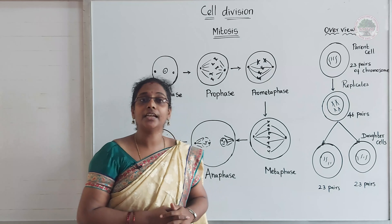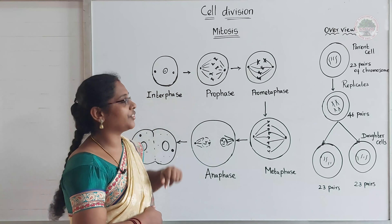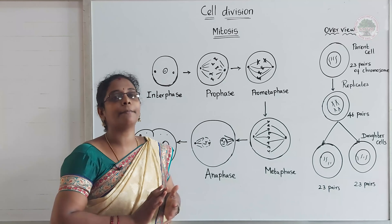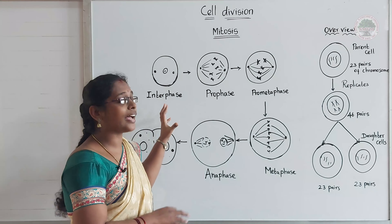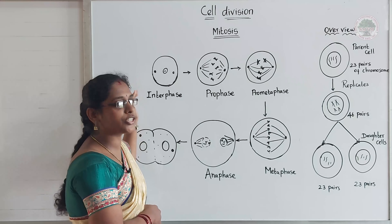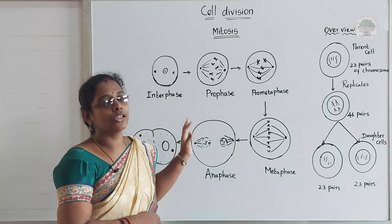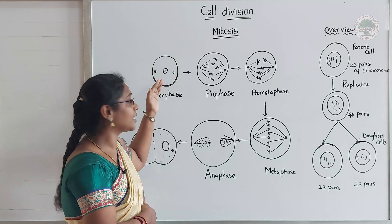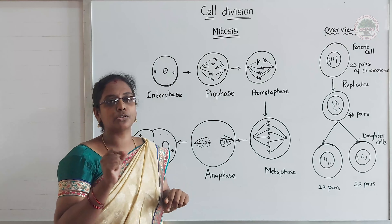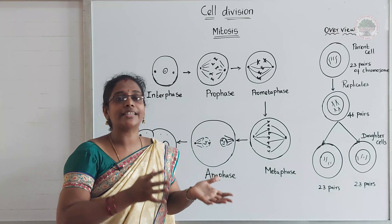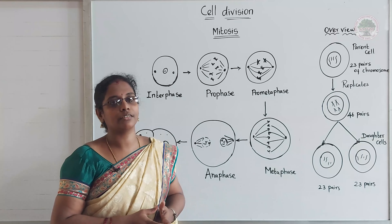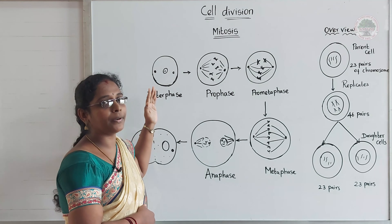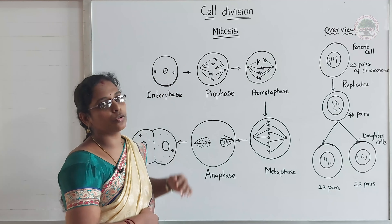Let's see what happens in mitosis cell division. The first phase is called interphase. Before entering mitotic cell division, the cell has to prepare itself. That preparation phase is called interphase. During interphase, the cell replicates its chromosomes and also replicates the centrosomes. Centrosomes are very important for cell division.